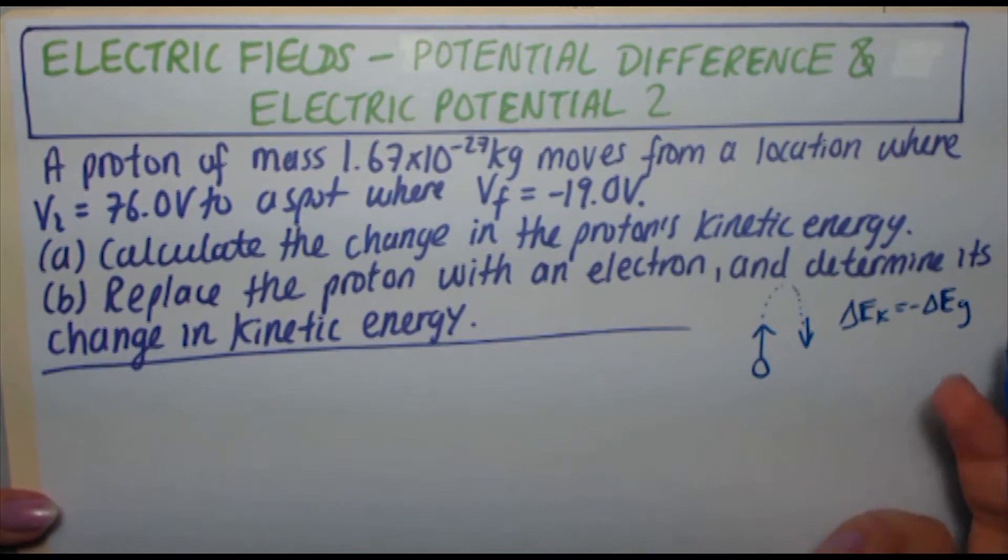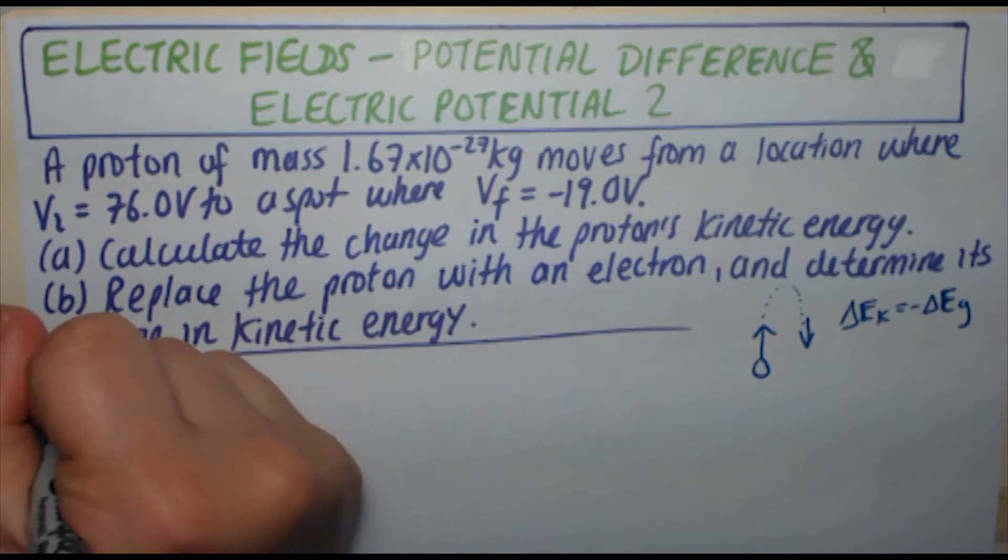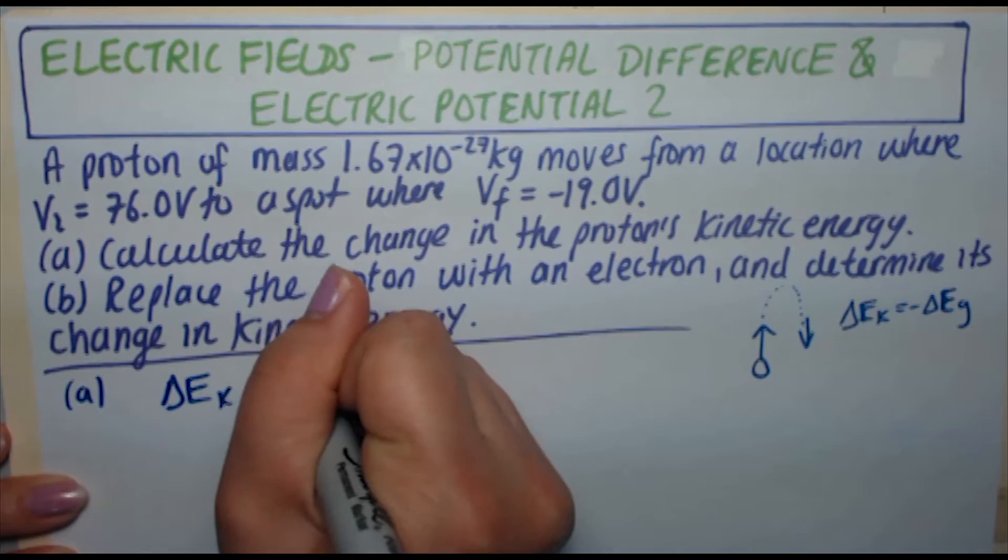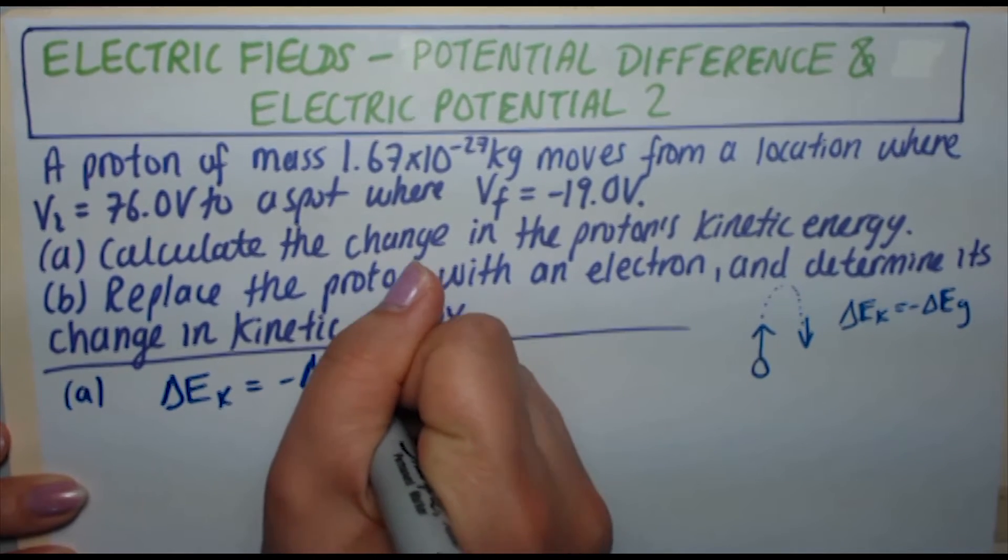In this case, we're dealing not with gravitational and kinetic, but with electric potential and kinetic. So using the same idea, we can say that the change in kinetic energy is equal to the negative change in electric potential energy.